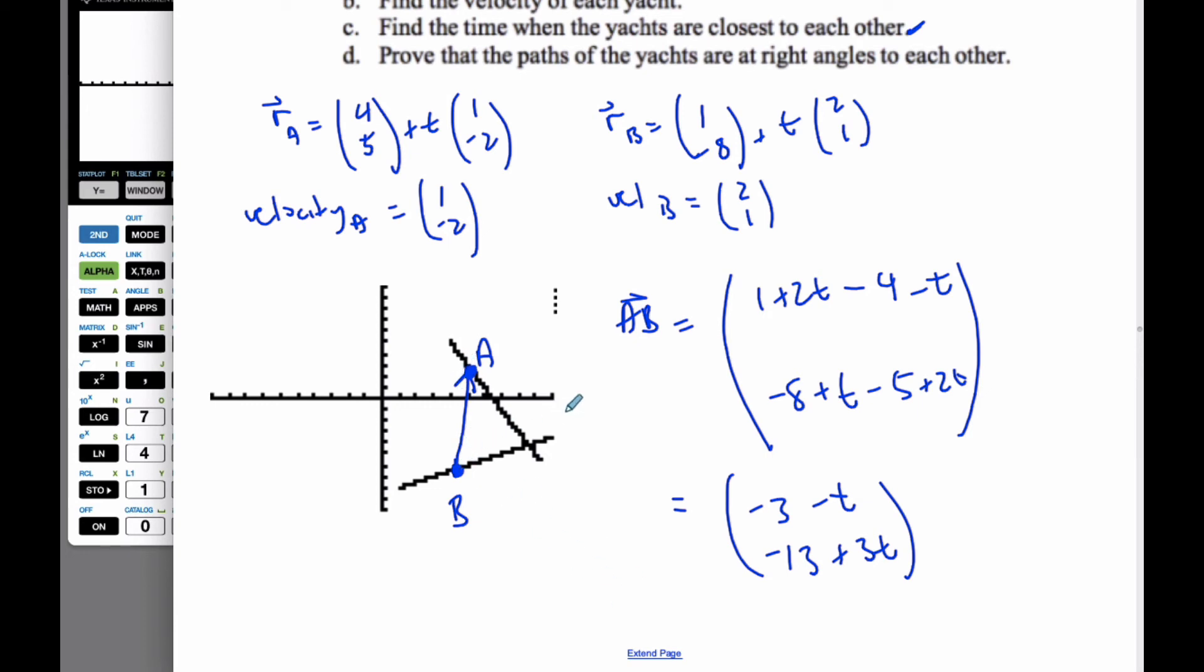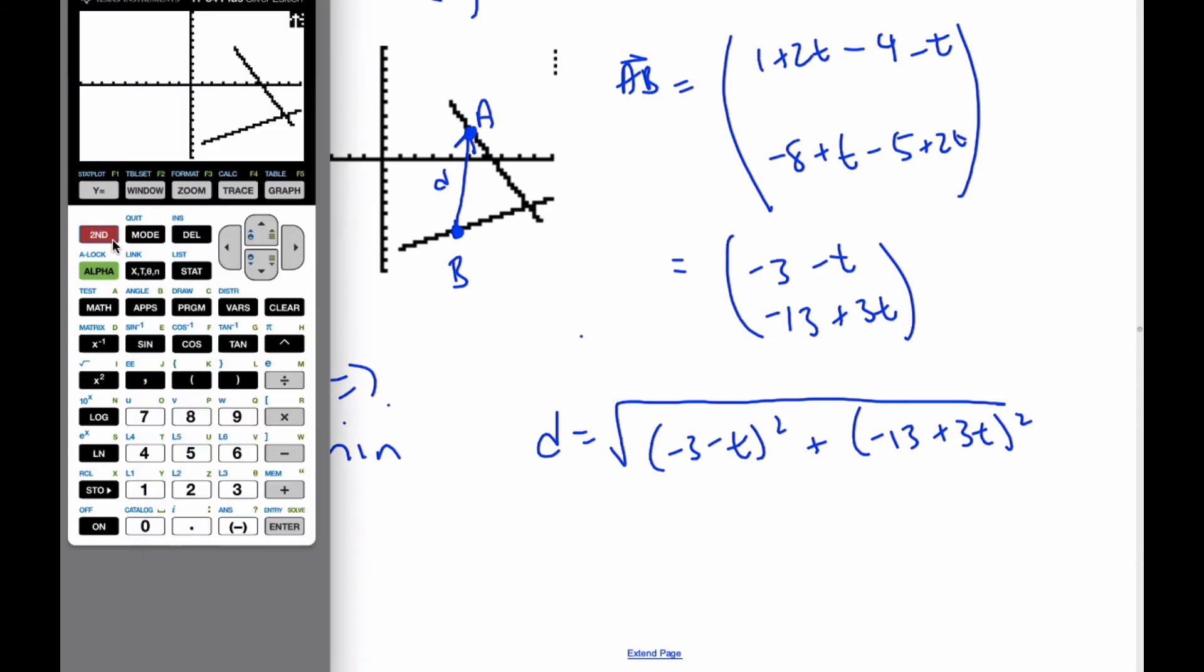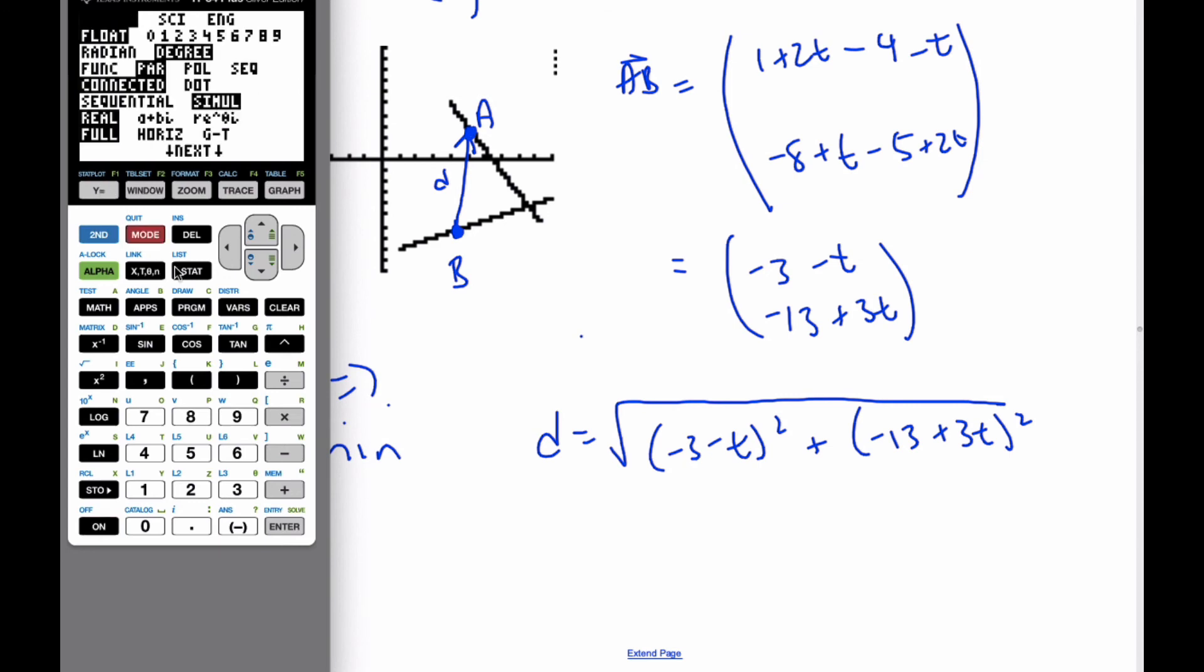And so I want the distance, so the magnitude of this vector, to be small. So we want to find when the distance AB, which is the magnitude of the vector, is small. So the magnitude of this vector is my X component squared plus my Y component squared. And I want this to be a minimum. What is T to be a minimum? Well, I'm going to go over to my calculator. I'm going to get out of the parametric mode. So mode, back to function.